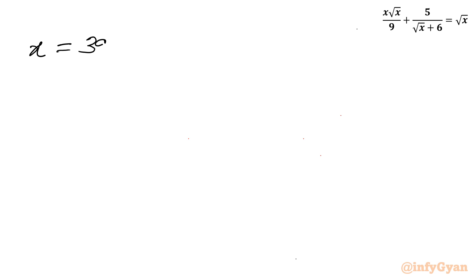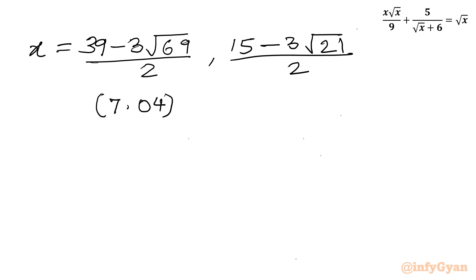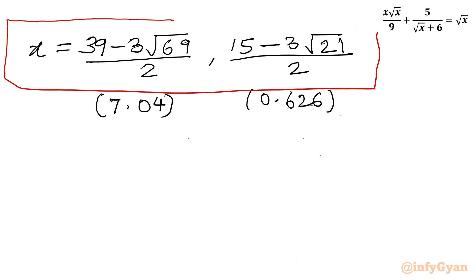So the two solutions are x equals (39 minus 3√69) over 2, and x equals (15 minus 3√21) over 2. Both values are positive — approximately 7.04 and 0.626 respectively. So ultimately there are two real solutions.